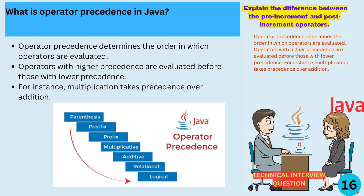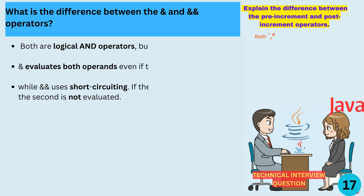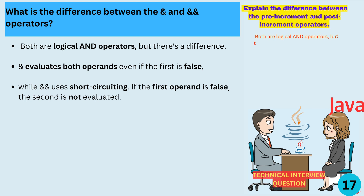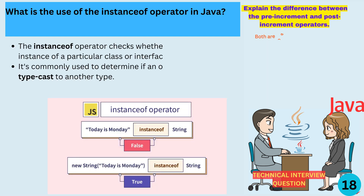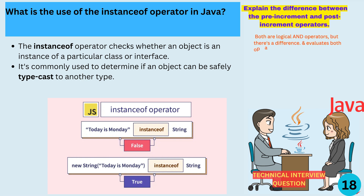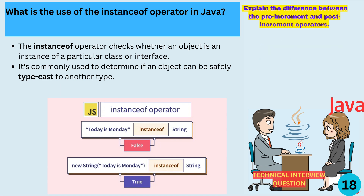What is the difference between the & and && operators? Both are logical AND operators, but there's a difference. & evaluates both operands even if the first is false, while && uses short-circuiting — if the first operand is false, the second is not evaluated. The instanceof operator checks whether an object is an instance of a particular class or interface, and is commonly used to determine if an object can be safely typecast to another type.